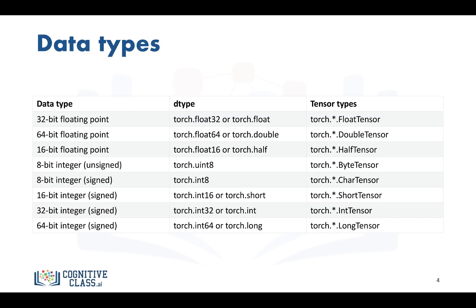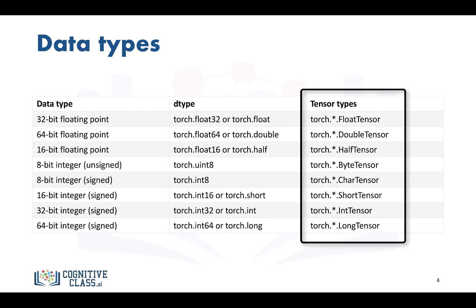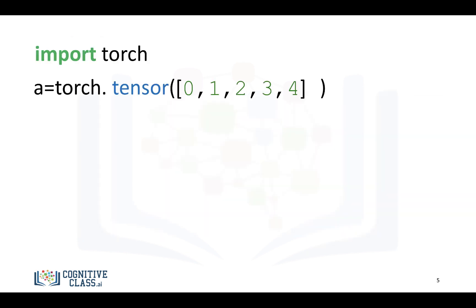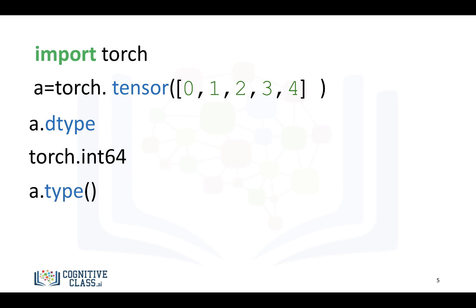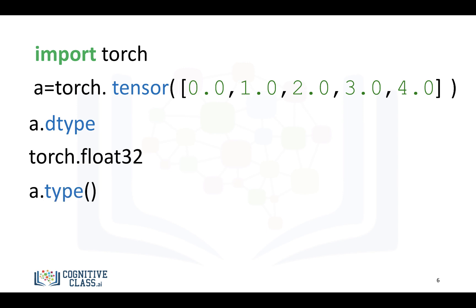This table summarizes the actual data contained within the tensor and the tensor type. We have a tensor which contains all integers, and the data contained within the tensor is a 64-bit integer; the actual tensor type is a long tensor. In the case of real numbers, the type of data stored within the tensor is a 32-bit float, and the actual type of tensor is a float tensor.